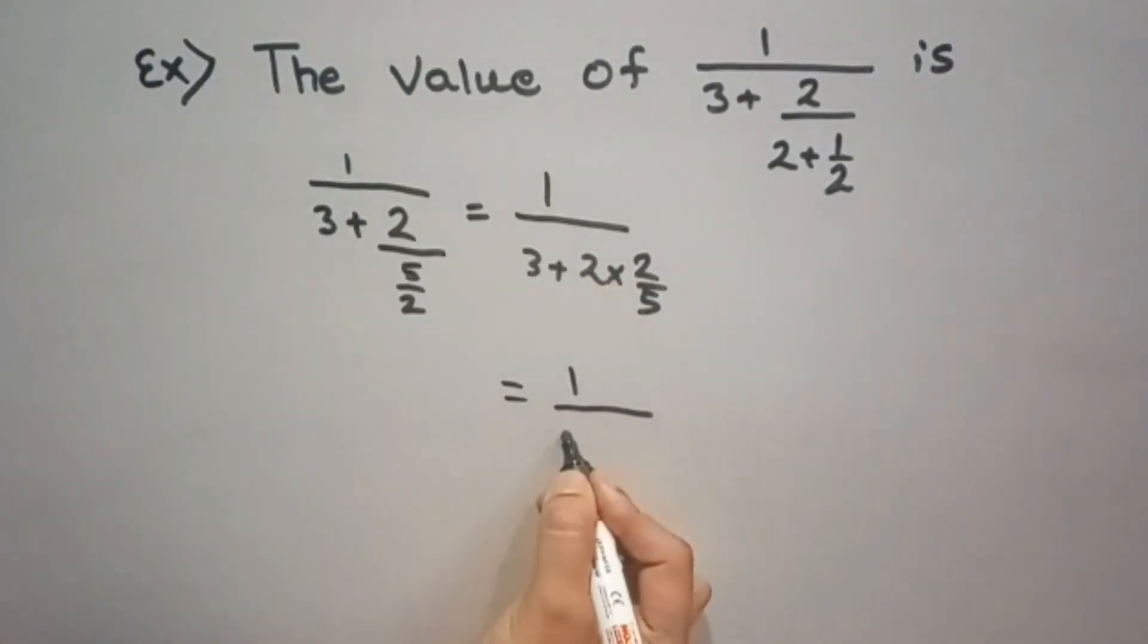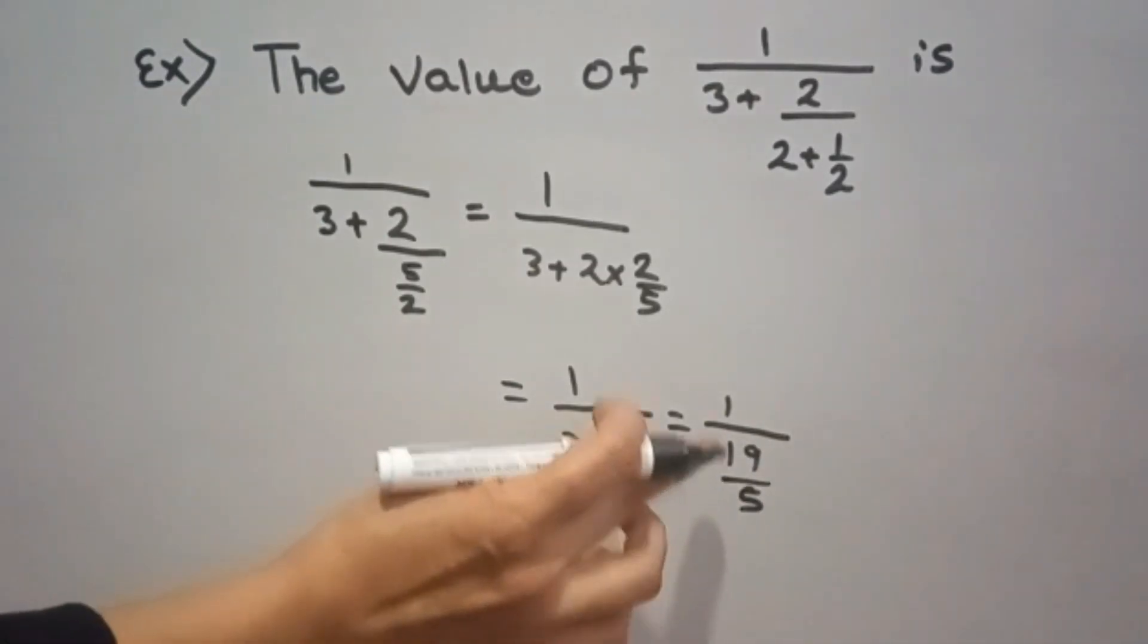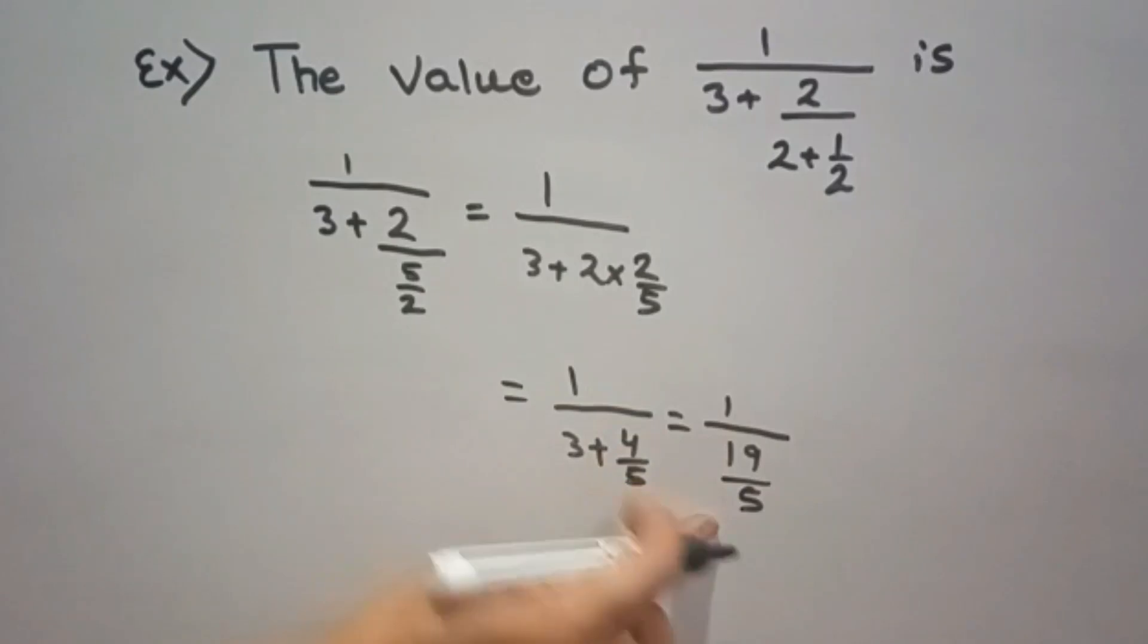1 upon 3 plus 2 to the 4, 4 by 5. Again, LCM 1 upon 3, 5 is 15. 15 plus 4 is 19 by 5. 1 upon 19 upon 5. Again, inverse of it, so it will become 5 by 19.